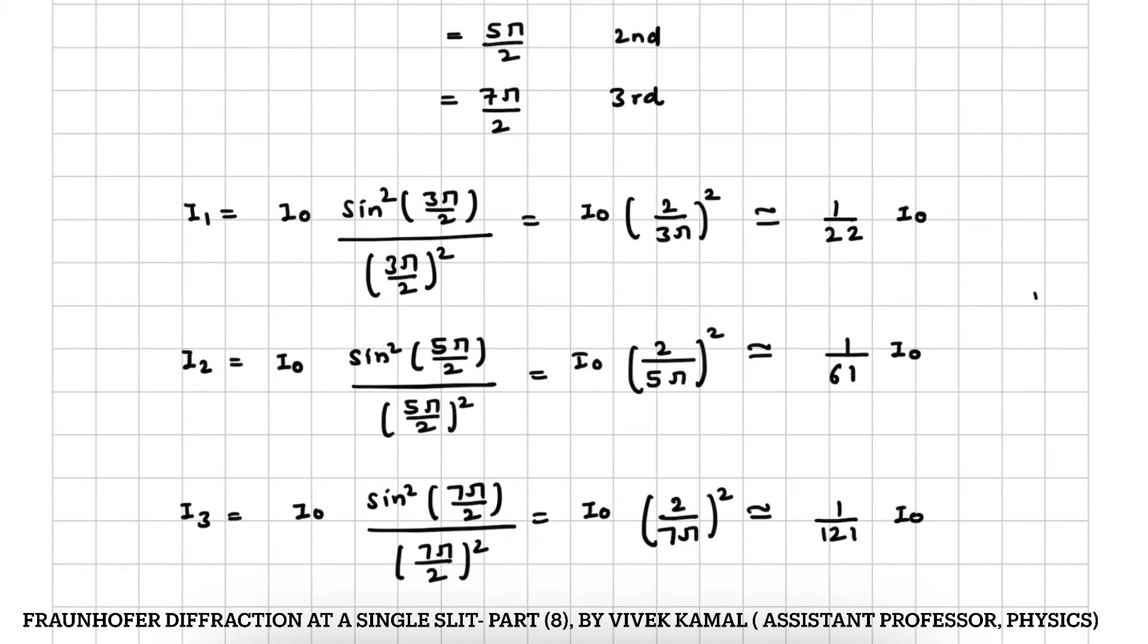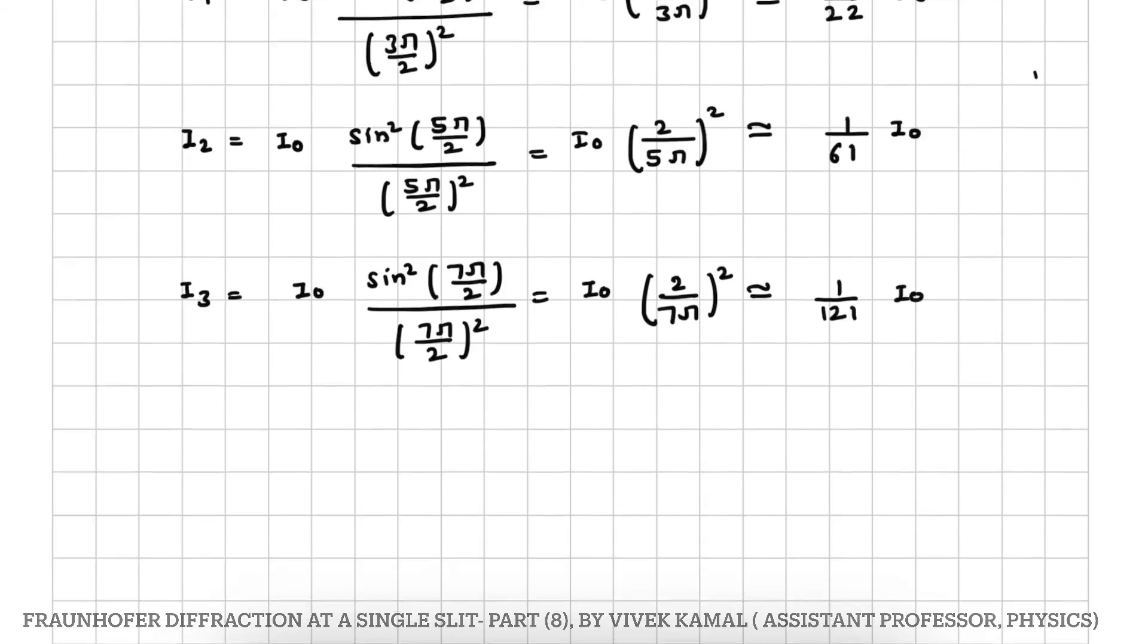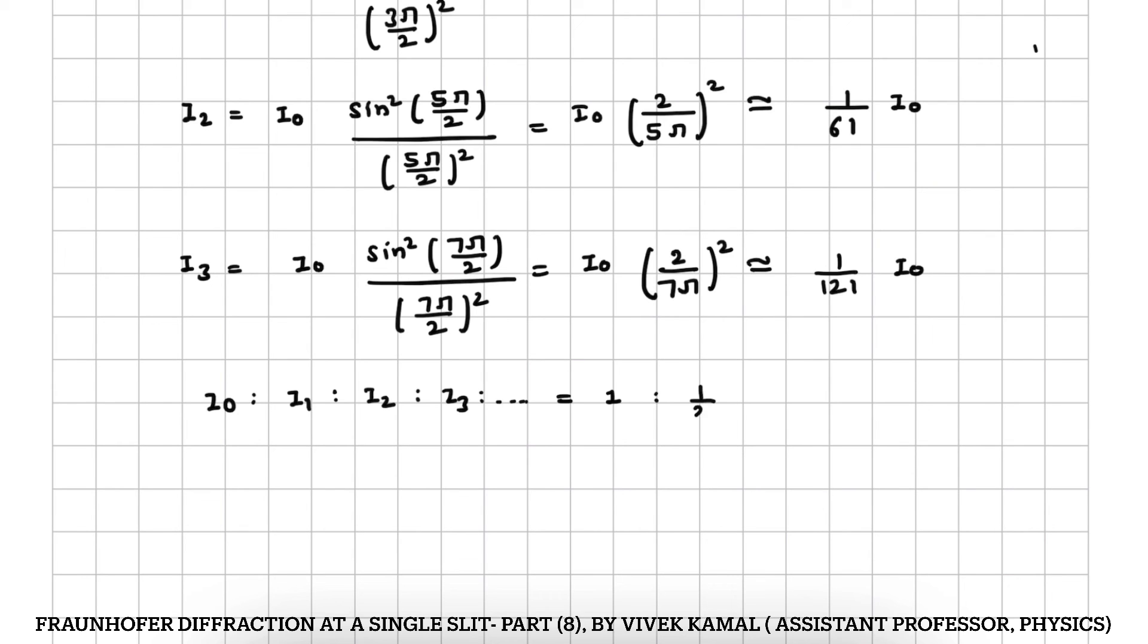Here we can see that the first secondary maxima, second secondary maxima, and third secondary maxima's intensity is reduced. If we find the ratio, I0 central maximum intensity ratio I1 ratio I2 ratio I3, this is equal to 1 ratio 1 by 22 ratio 1 by 61 ratio 1 by 121.